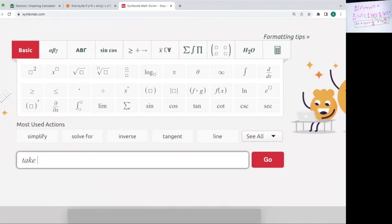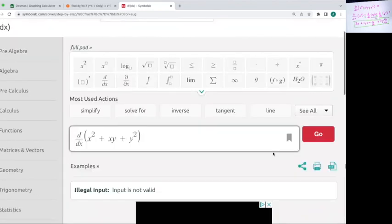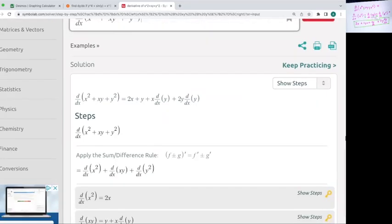So if I want to say take d by dx of x squared plus xy plus y squared, go, it will show me the steps. So first it will give me the final answer, and then it will show me the steps.